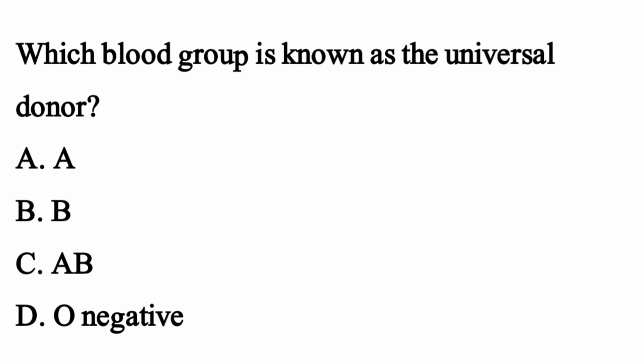Which blood group is known as the universal donor? The right option is option D: O negative.